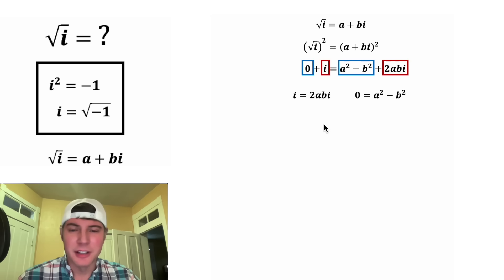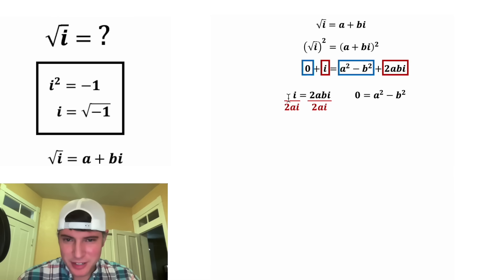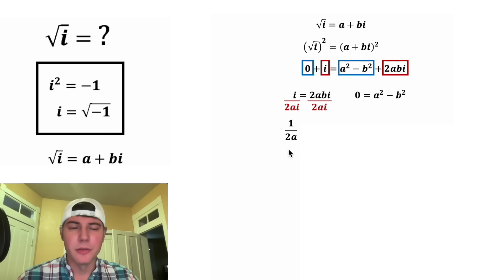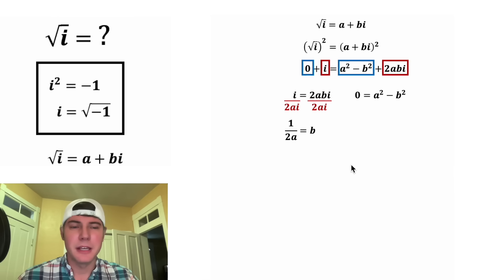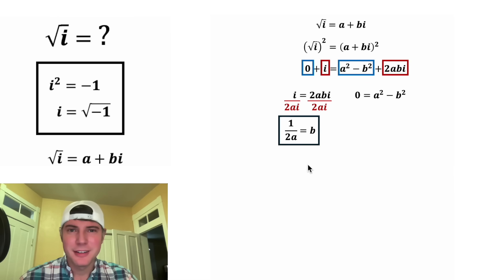Let's start with the imaginary equation and get b all by itself. Let's divide both sides by 2ai. On the left-hand side, the two i's cancel each other out, giving us 1 over 2a. On the right-hand side, the 2, the a, and the i cancel out, leaving just b. So we know that b is equal to 1 over 2a.